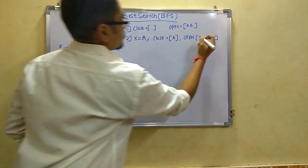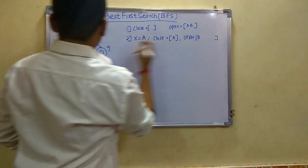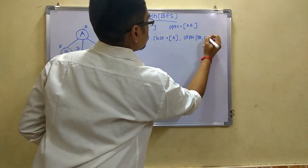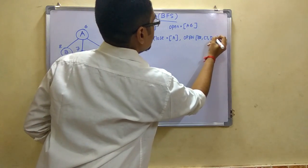Next we create the set of open nodes. After A we have further open nodes as B, C and D. We assign these nodes along with their weights - B8, C7 and D9.